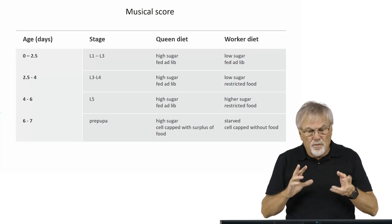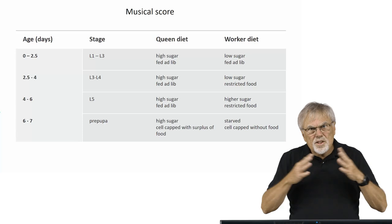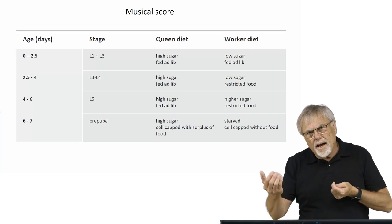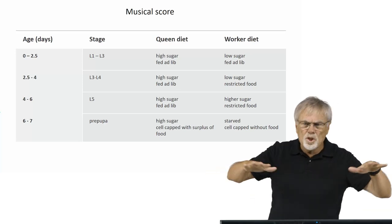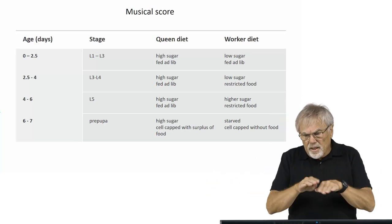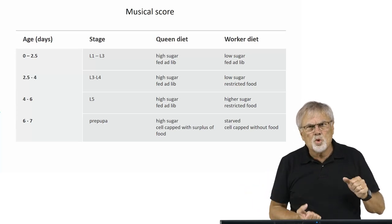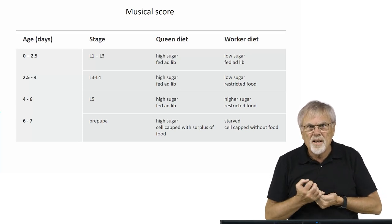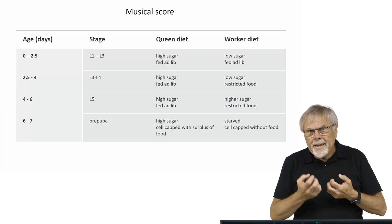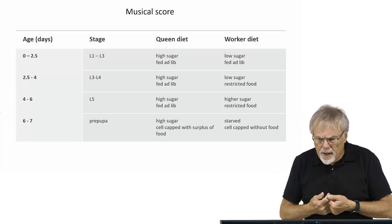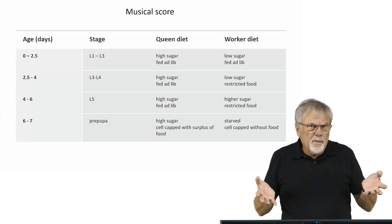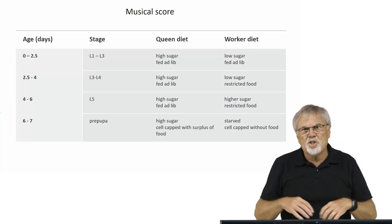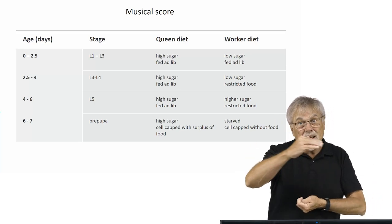In the third and fourth larval instars, when they're about two and a half to four days old, the queen is still getting fed high sugar and she's getting fed ad-lib — all she can possibly take in. But the worker's diet changes. Now the score, the musical score changes, and she's now getting still a low sugar content of food, but it's restricted — she's not getting all she can eat. They're holding back; she's staying a little bit hungry. They're not feeding her as much as they're feeding the queen larva. In the fifth larval instar, around the sixth day, the feeding regime of the queen remains the same, but the worker changes. Now they get high sugar and a restricted food — they're still not getting all they can eat, but now it's high in sugar again, back like what the queen had. And so this is sort of an orchestrated diet.